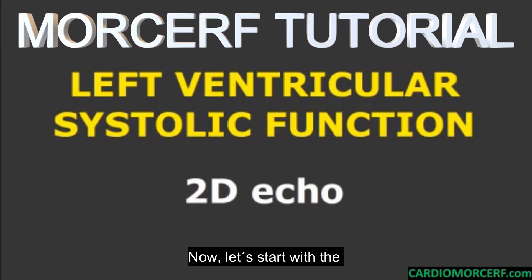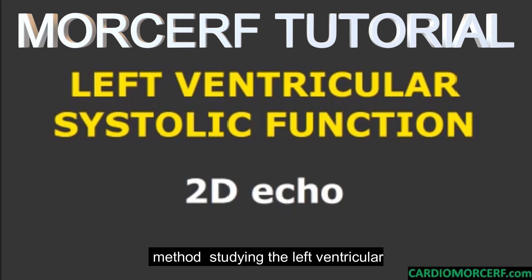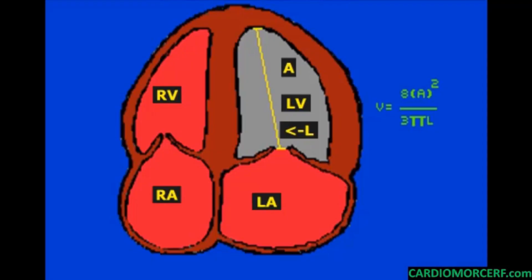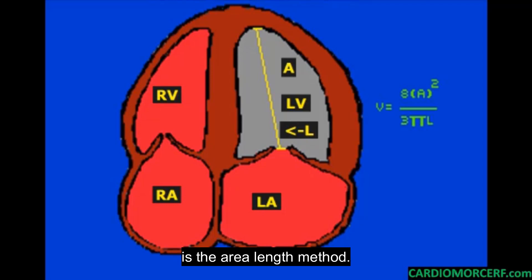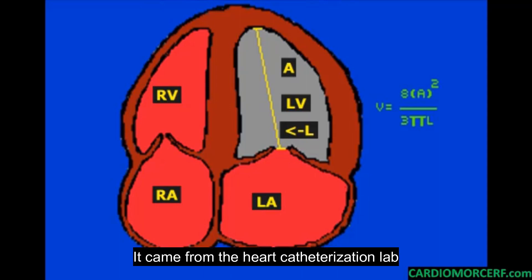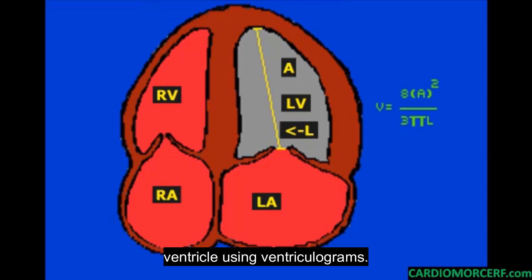Let's start with studying the left ventricular systolic function by 2D echo. Another way to obtain volumes of the left ventricle to analyze the ejection fraction is the area-length method. It came from the heart catheterization lab as a method to study the size of the left ventricle.